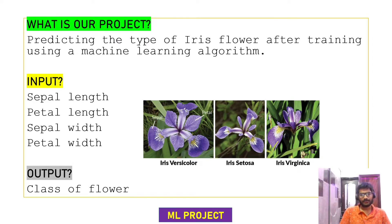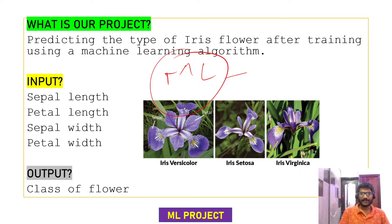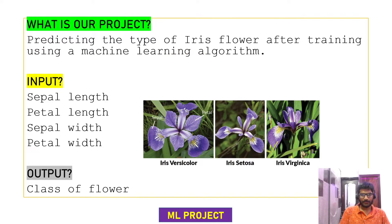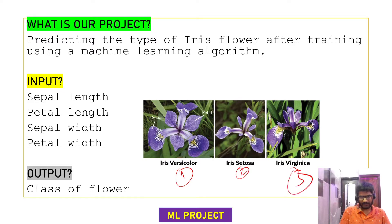Basically, machine learning is all about predicting — we give some input data and then train the system. Depending upon the training, we get some predictions as output. Our project is about feeding the system with input data, called training data. There are three categories of iris flowers, and we call this dataset the Iris dataset.